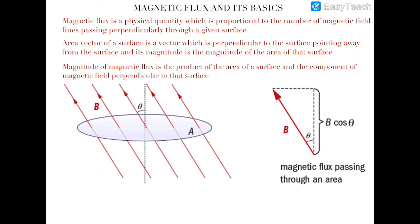It is not correct to say that magnetic flux is the number of field lines — in fact, it is a quantity which is proportional to the number of field lines. So if there are four magnetic field lines passing through a surface, we cannot say that magnetic flux is four units. It is important to note that magnetic flux is not exactly the number of field lines passing perpendicularly through a surface.